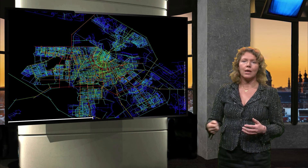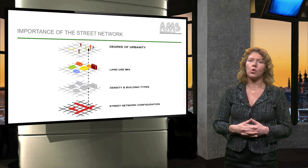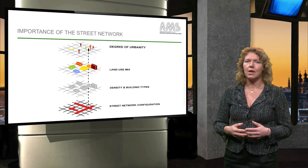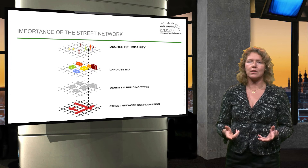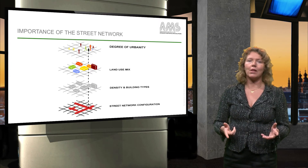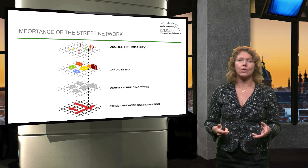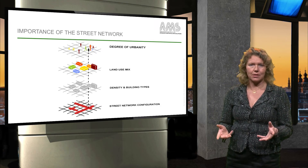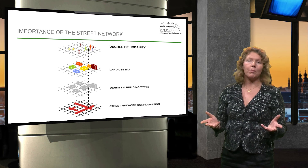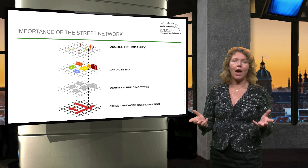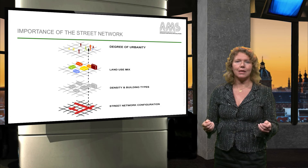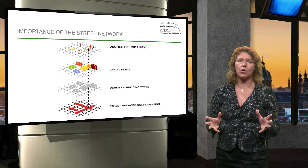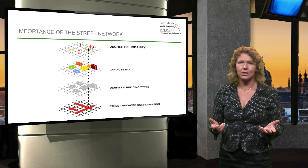The street network plays a large role in how cities transform. As research has shown, the street network configuration tends to steer the building density, but also the land-use mix that influences how people use streets. So, the more people in streets, the higher degree of urbanity. Density, diversity and degree of street life are very strongly influenced by the street network configuration.